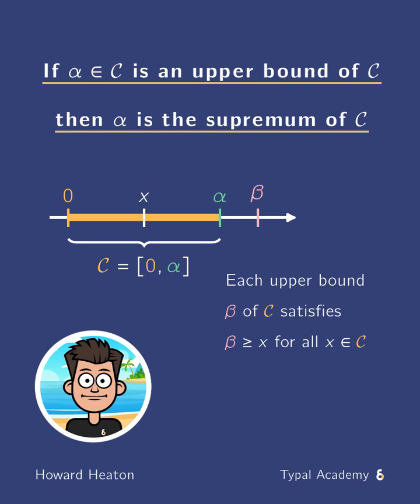Equivalently, the contrapositive of this statement is that if beta is less than alpha, then beta is not an upper bound of C. And that's precisely what we wanted to show. So we can conclude that alpha is the supremum of C.